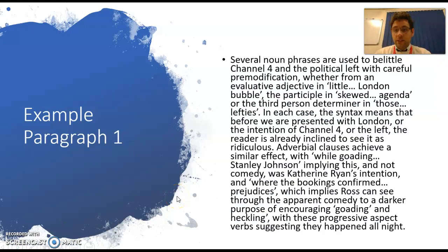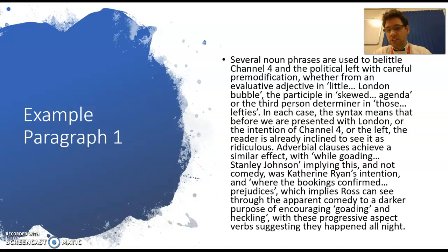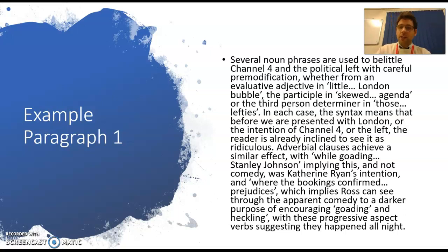What might this look like in a paragraph in the exam? You want to aim for about three of these if you can. So if you're writing on sentence structure, it might go: 'Several noun phrases are used to belittle Channel 4 and the political left with careful pre-modification.' I've got the contextual point that the left is being belittled, but we're talking about the noun phrases and the pre-modification - not the words themselves, but how those words are ordered. Whether from the noun phrase 'little London Bubble,' the participle in 'skewed agenda,' or the third person determiner in 'those lefties' - the syntax means that before we're presented with London, or Channel 4, or the left, the reader is already inclined to see it as ridiculous.